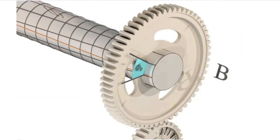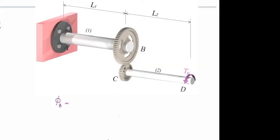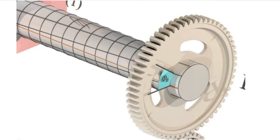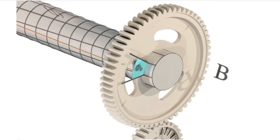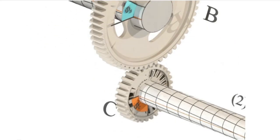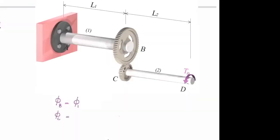How much is the angle of twist at B? That would be equal to twist of element number 1. So twist at B will be equal to twist in the shaft number 1. How much would be the twist in gear C? These are two connected gears. Use the gear ratio to determine how much is that.